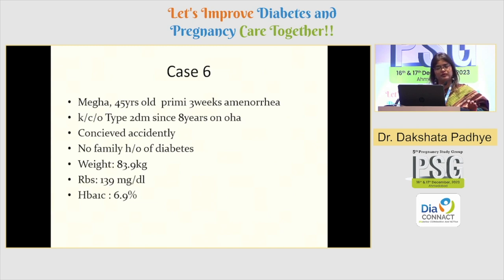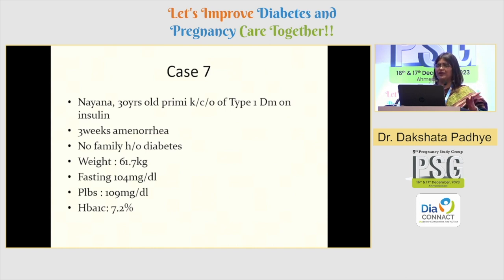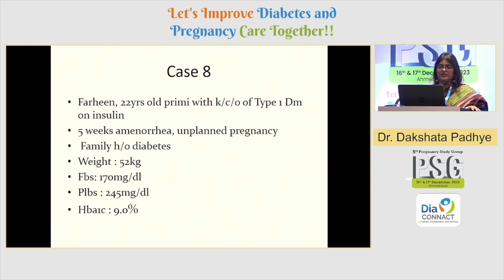Case 6: 45-year-old patient, three weeks amenorrhea, type 2 patient — this is the diabetes in pregnancy group, not GDM group. Case 7: Type 1 diabetes, planned her pregnancy, still A1C on the higher side at 7.2. She comes with three months of amenorrhea, diabetic for the last 20 years. So 7.2 is also good for her — she is again diabetes in pregnancy. We can't label her as gestational diabetes. Case 8: 5 months of amenorrhea, unplanned pregnancy, HbA1c 9.0, known case of type 1 diabetes on insulin. We really have to give thought to whether to continue this pregnancy.